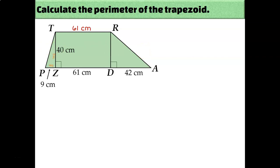Looking at triangle TPZ, which is a right triangle, sides PZ and TZ are the legs, and side PT is the hypotenuse. And we need to know the length of that hypotenuse because it's one of the sides of the trapezoid. So I can write that leg squared plus leg squared equals hypotenuse squared, which is 81 plus 1600. And if I square root 1681, I find out that PT must be 41 centimeters long.